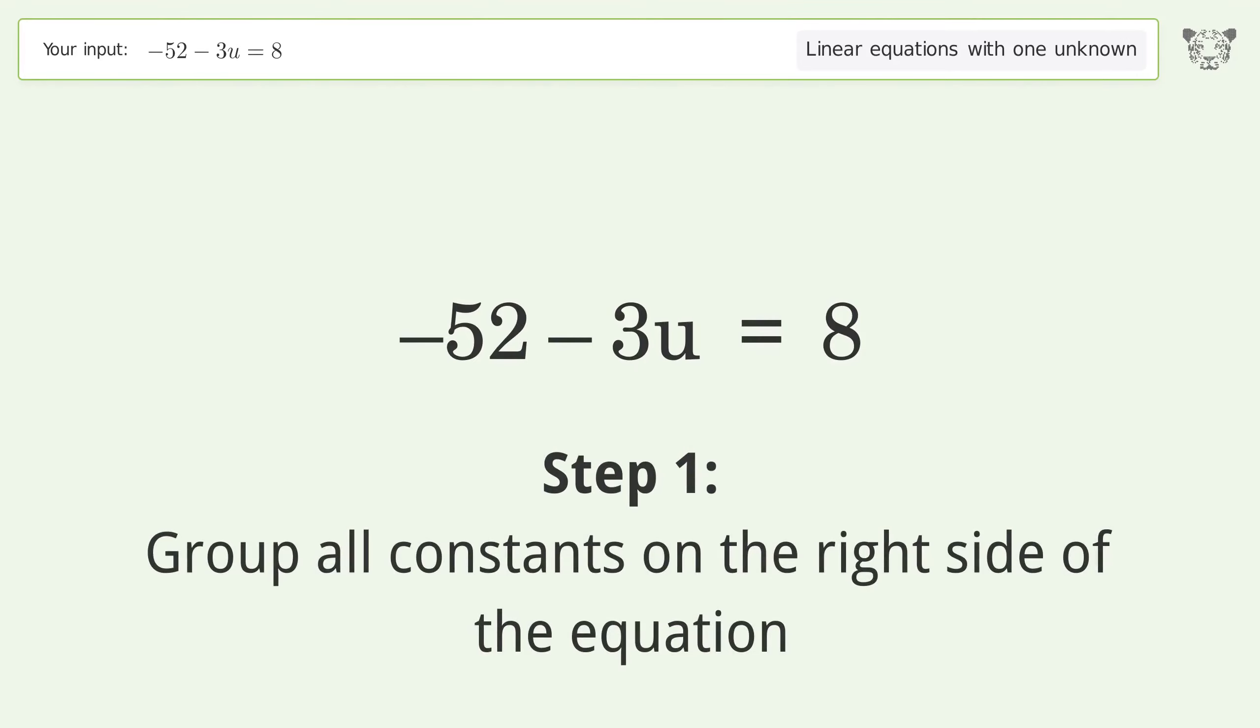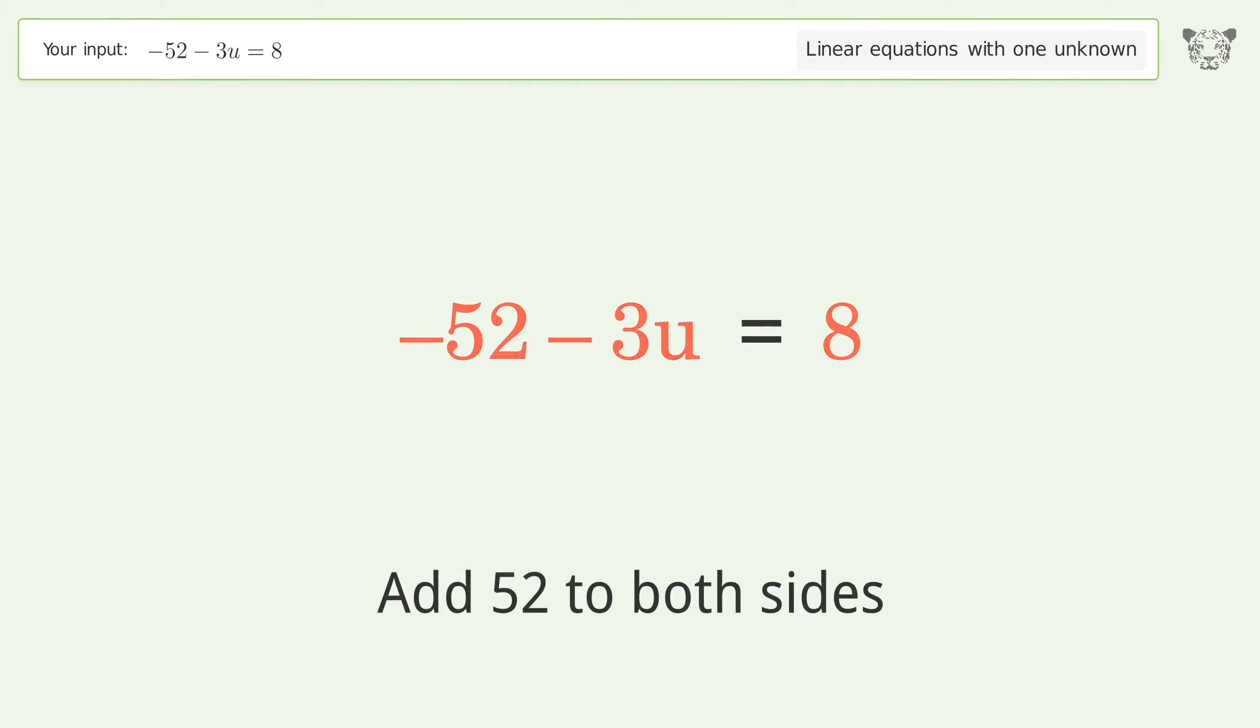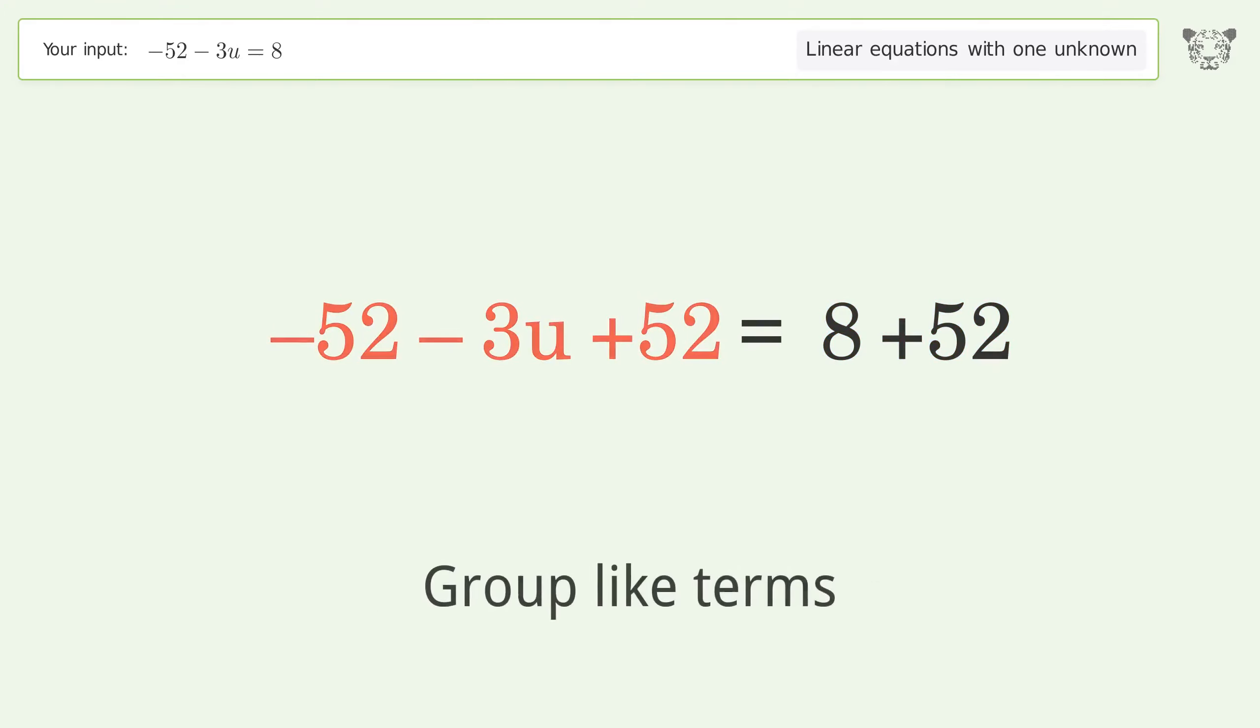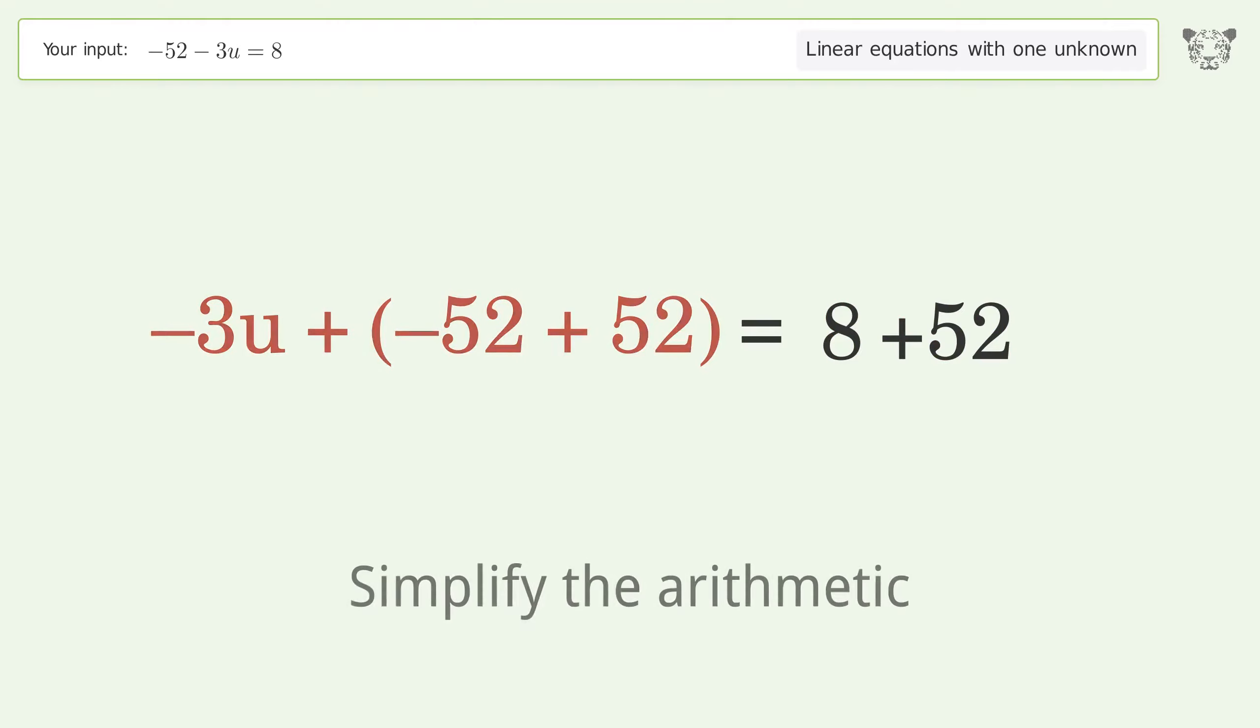Group all constants on the right side of the equation. Add 52 to both sides. Group like terms. Simplify the arithmetic.